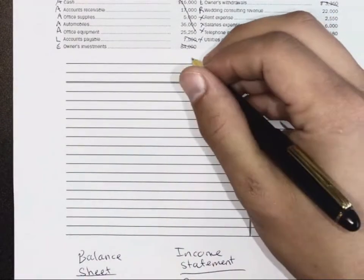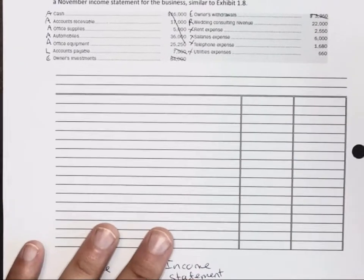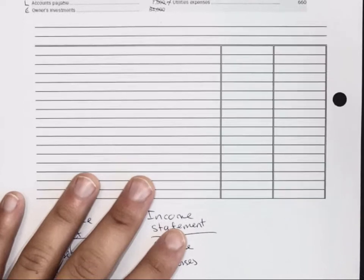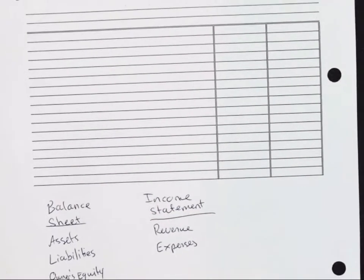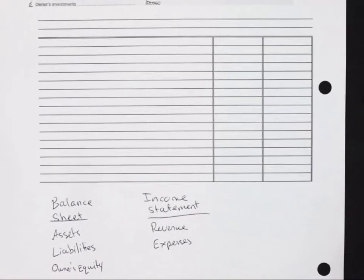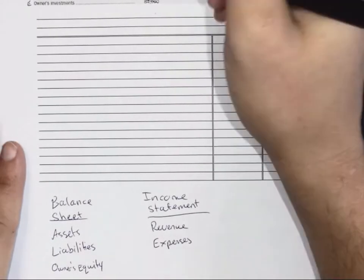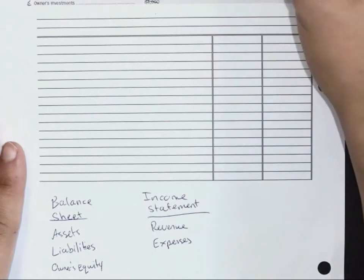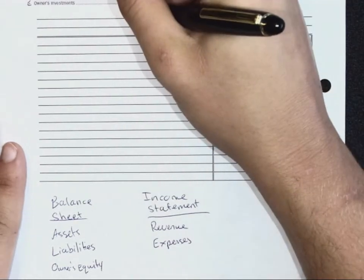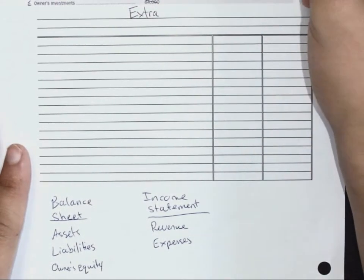First things first, we need to create a title for your statement. This will be the easiest mark you ever get on your midterms or finals. If you don't create your title, you're going to lose a mark — it is just a free mark you're giving away. It starts with the top line, always centered, with the name of the business: Extraordinary Studios.